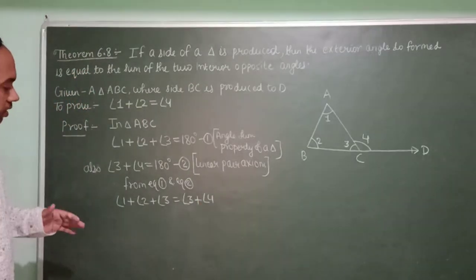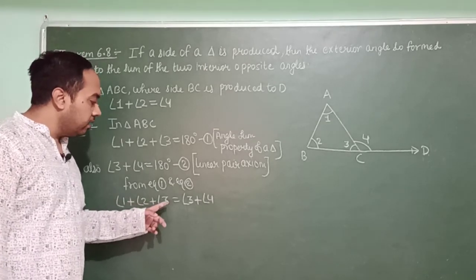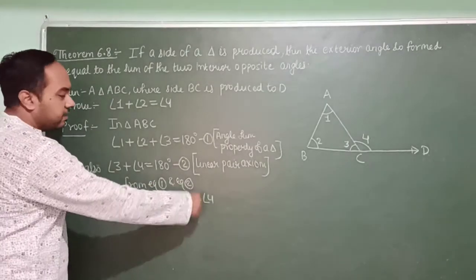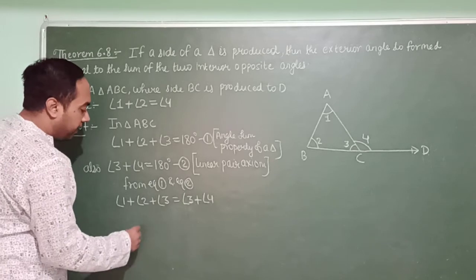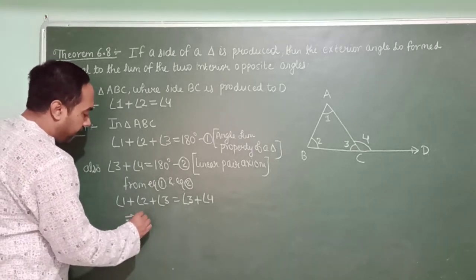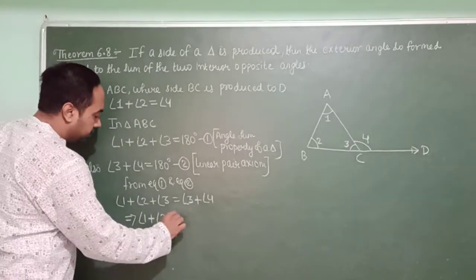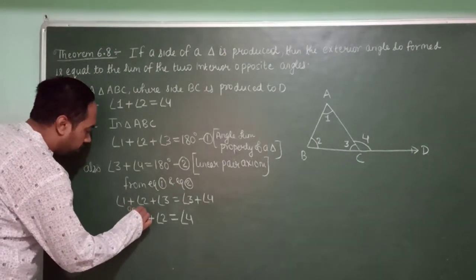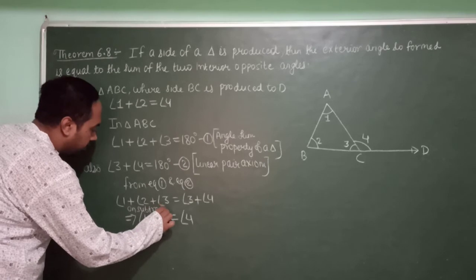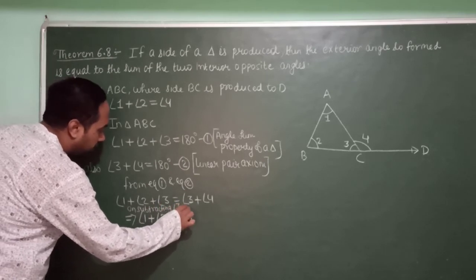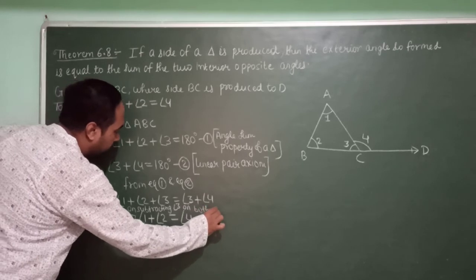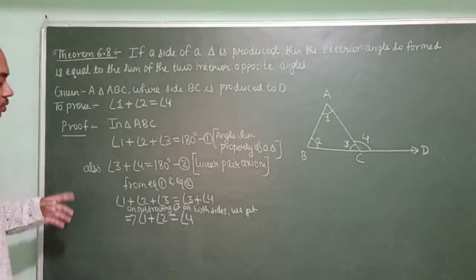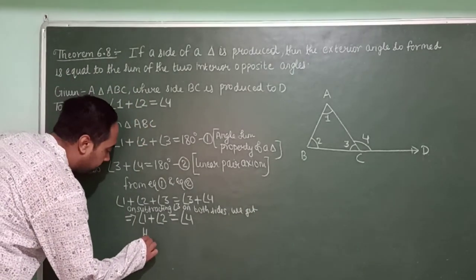Now, subtracting angle 3 from both sides — angle 3 cancels on both sides — and we get angle 1 plus angle 2 equals angle 4. Hence proved.